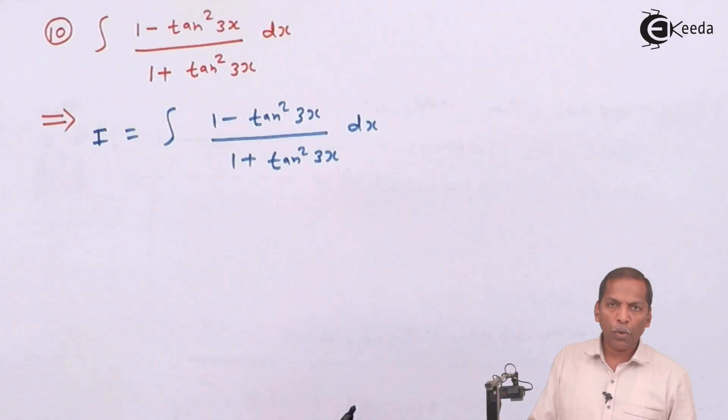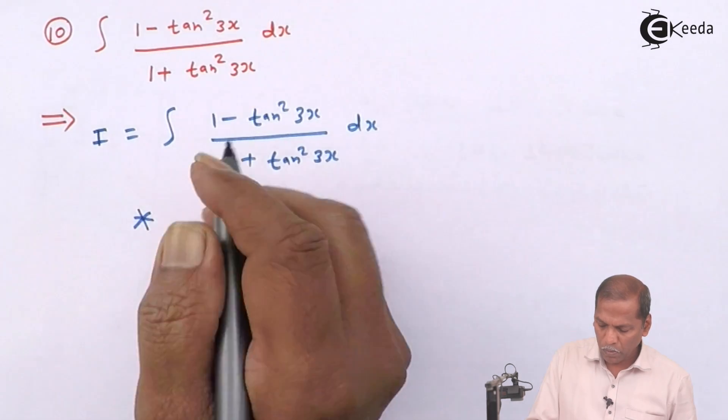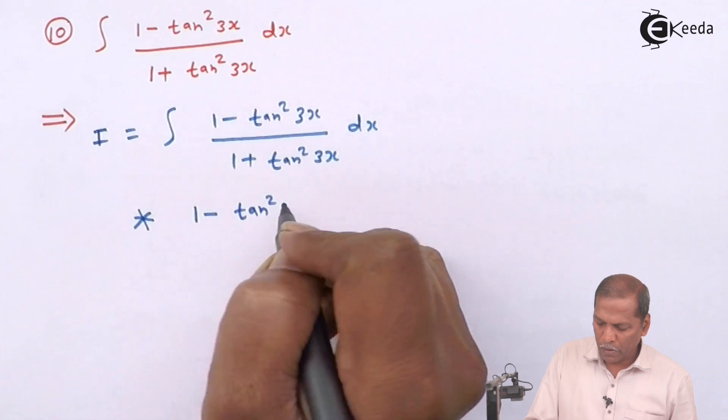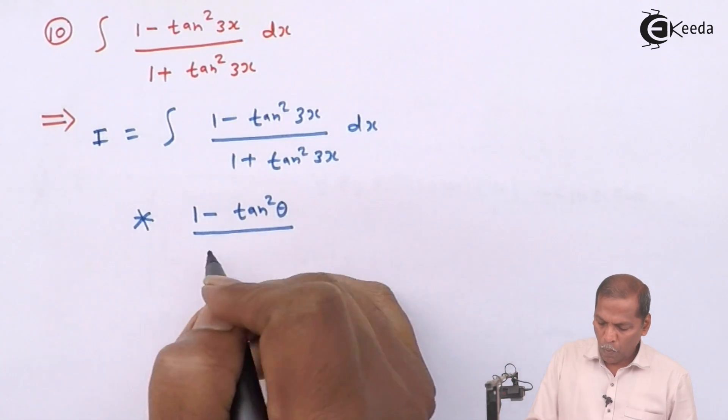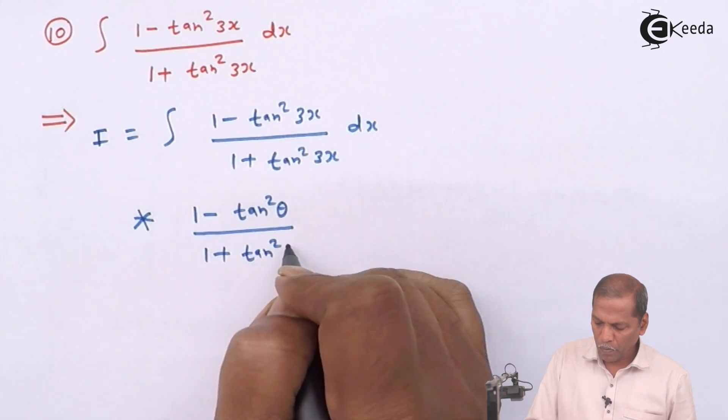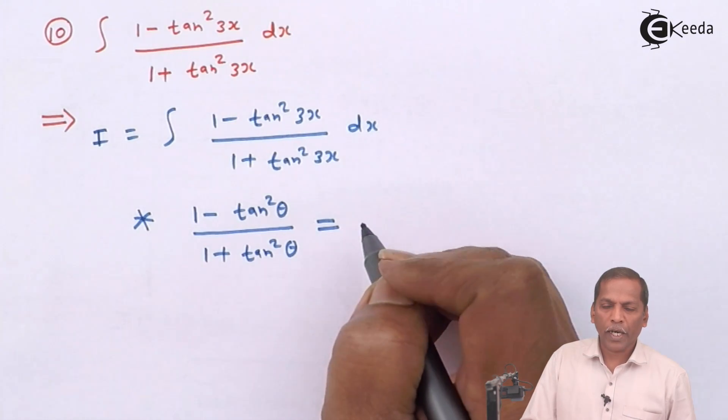Then here we use Trigo formula that 1 minus tan square theta upon 1 plus tan square theta is equal to cos of 2 theta.